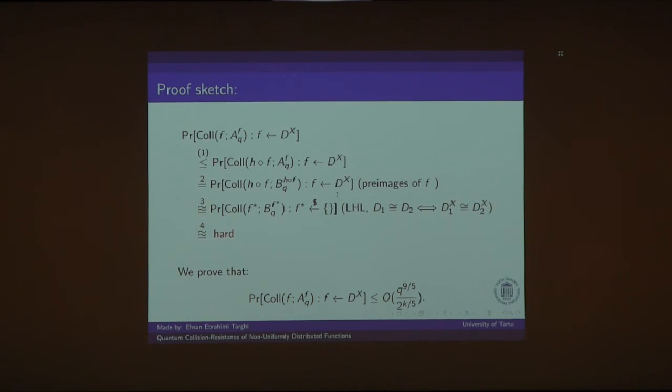And here is a sketch of the proof. The first probability is the probability of outputting a collision for function f. And A sub q to power f means that adversary A makes q queries to the function f. When f is a function whose outputs are chosen according to distribution D, let's suppose that distribution D has min-entropy K.